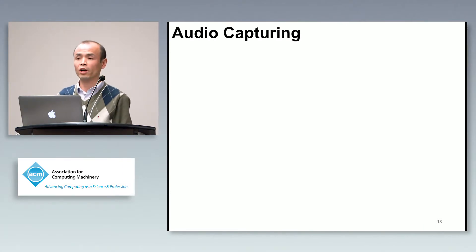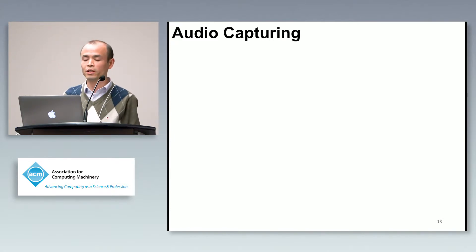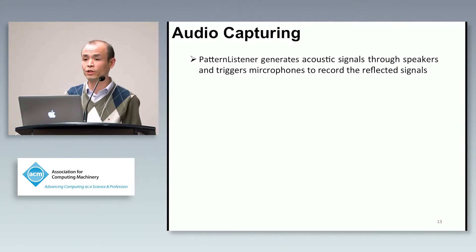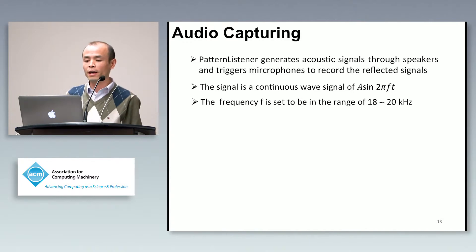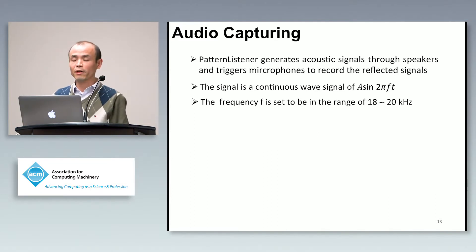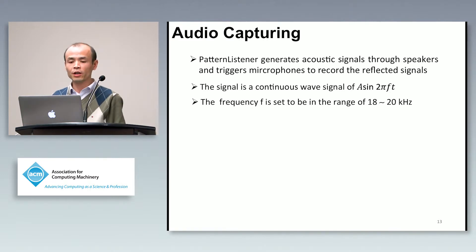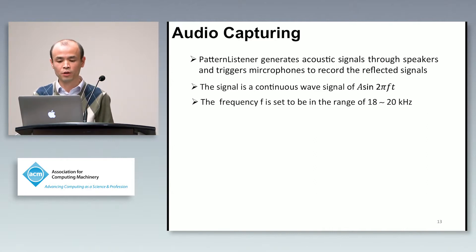After detecting the unlock behavior, we ask the malware to generate acoustic signals through the speakers, and meanwhile we trigger the microphone to record the signals reflected by the fingertips. The signal is a continuous wave of A·sin(2πft). We can demodulate this signal and analyze the reflections from the fingertips. The frequency is set in the range of 18 to 20 kHz, because normally people cannot hear signals in this range.